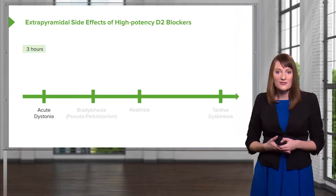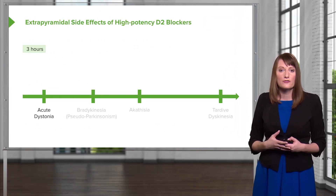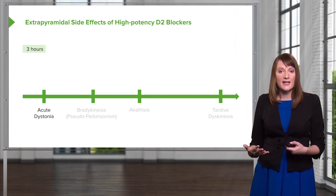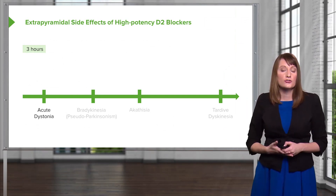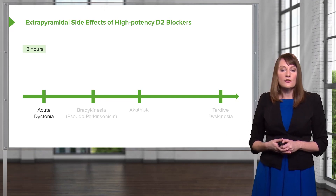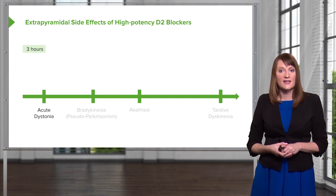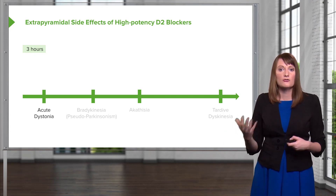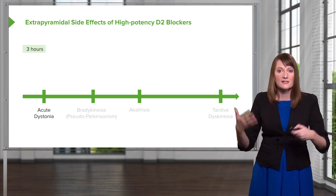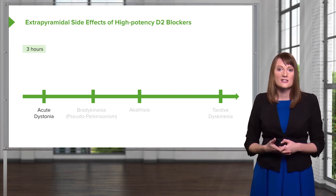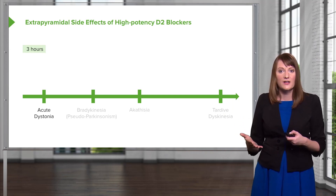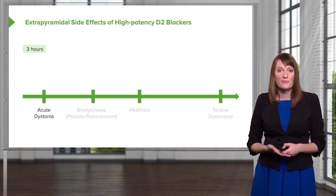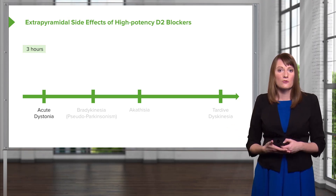Extrapyramidal side effects come from dopamine blockade, typically through the nigrostriatal pathway. The earliest signs can be acute dystonia. This might manifest as an oculogyric crisis where the eyes roll up in the head. It can also be seen as torticollis or neck stiffness. Acute dystonia can be very distressing to a patient and can occur immediately or within hours.